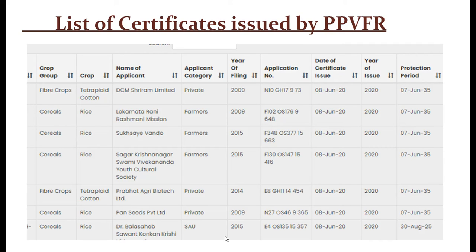This is the list of certificates issued by the PPVFR authority in different crop groups: fiber crops, cereals, and others. It includes the name of applicants, applicant category from private sectors, farmers, or state universities, year of filing application, application number, certificate issued date, and period of protection.